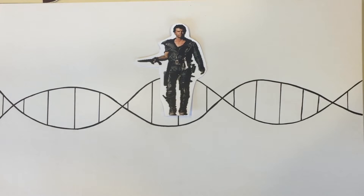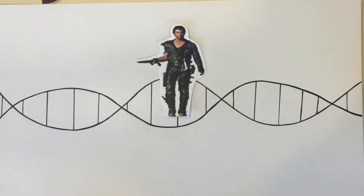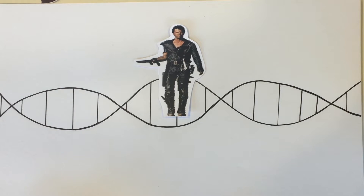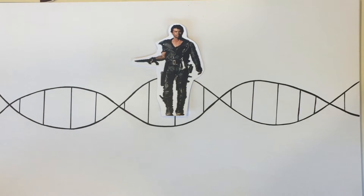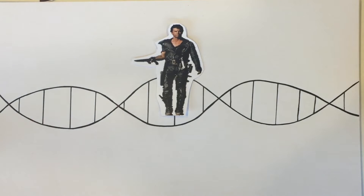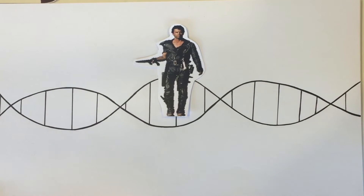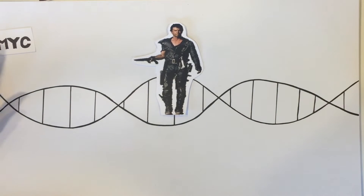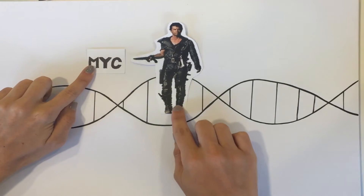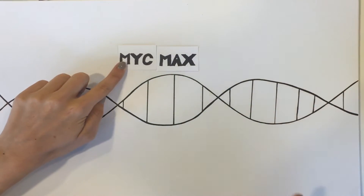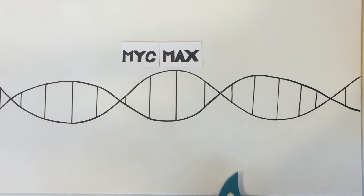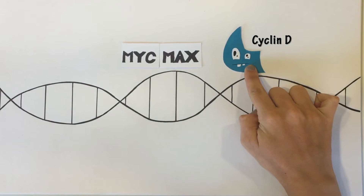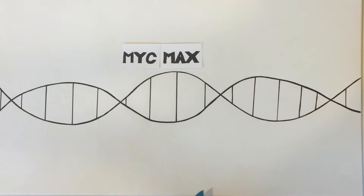During G1 phase of the cell cycle, presence of growth factors will activate growth factor receptors and their downstream signaling pathways. MAD Max transcription factors bound to DNA repress transcription and induce growth inhibitory proteins. Myc associates with Max at the DNA and MAD is released. Myc-Max activates transcription and expression of cyclin D and CDK4, increasing cyclin D levels.